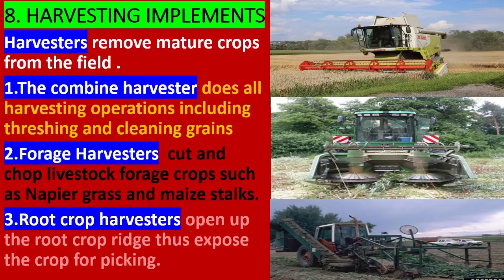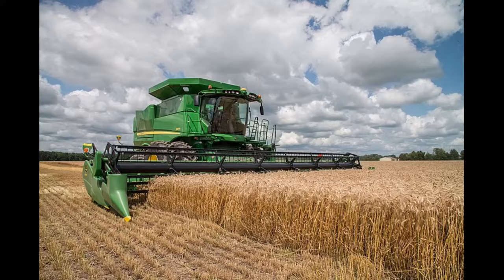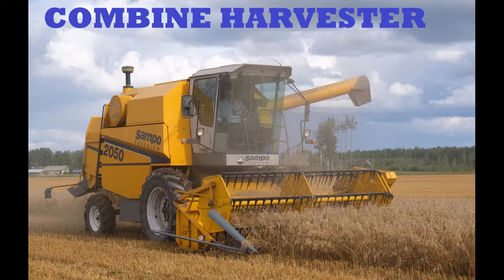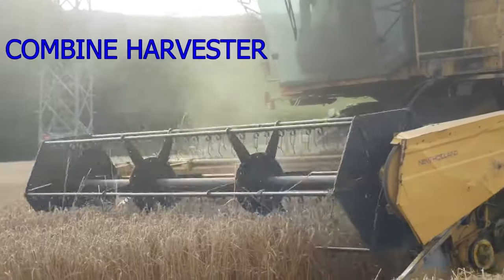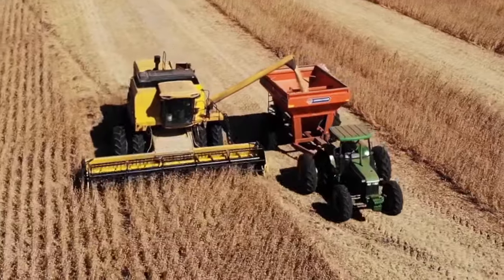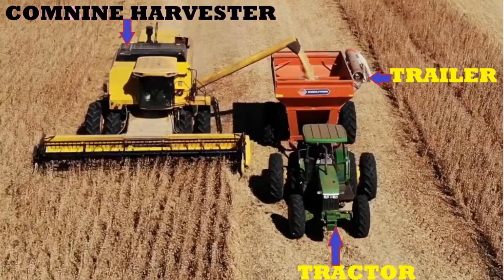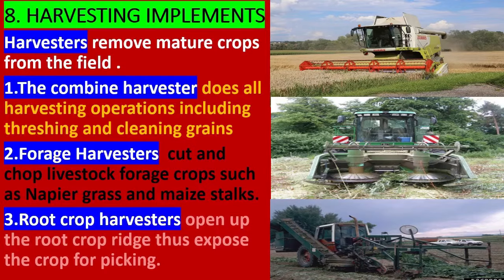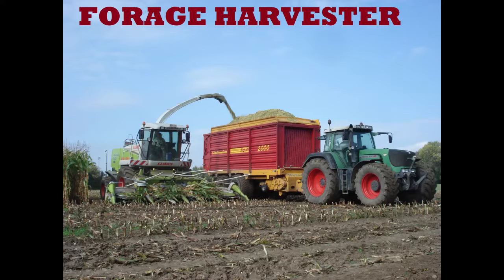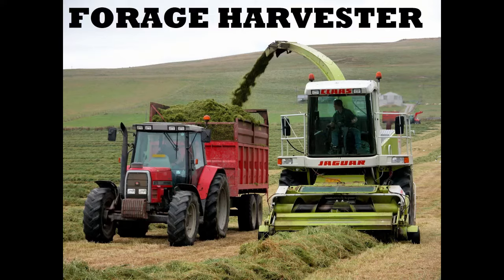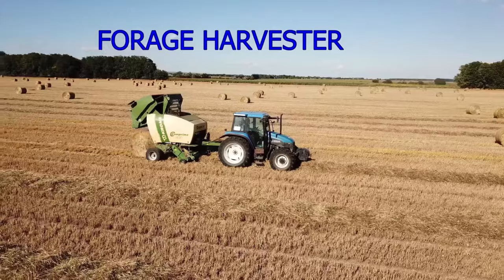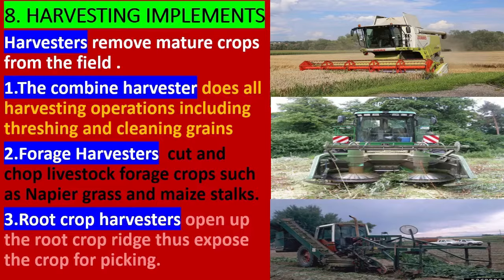8. Harvesting Implements. Harvesters remove mature crops from the field. The combine harvester does all harvesting operations including threshing and cleaning grains. Forage Harvesters cut and chop livestock forage crops such as napier grass and maize stalks. Root crop harvesters open up the root crop ridge, thus exposing the crop for picking.